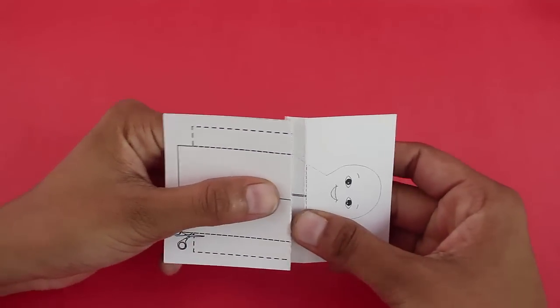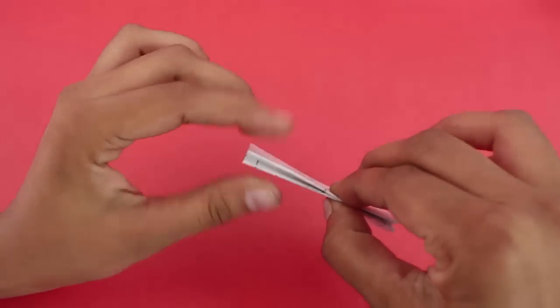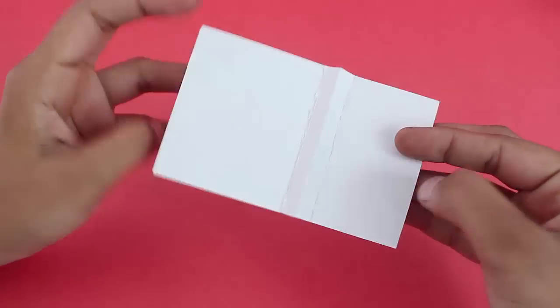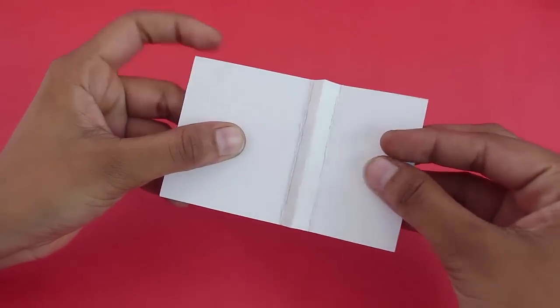Now after folding the three lines, the middle one will be a mountain fold, the other two valley folds. Observe the motion of the card, upturn it.